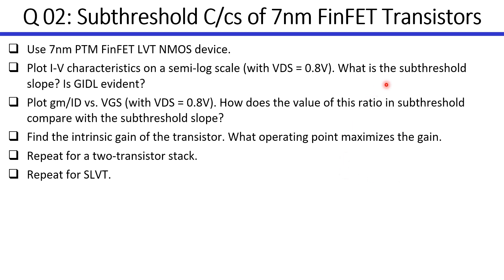We'll have a look at the sub-threshold slope, the GIDL, the GM over ID ratio, and the intrinsic gain of the transistors. We will do all of this for a 7nm PTM FinFET low-VT inmost device, and as an exercise, you will repeat all of this on your own for a two-transistor stack and for a super low-VT device.